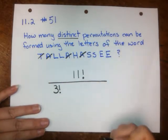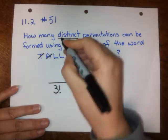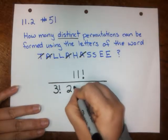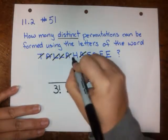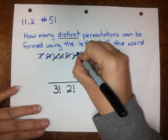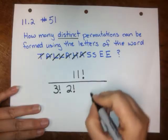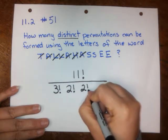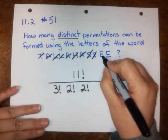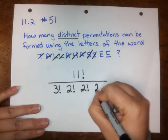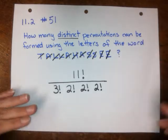Cross them out so I know I've dealt with them. How many L's do I have? 1, 2. So I'll put a 2 factorial in my denominator to deal with those 2 L's. How many H's do I have? Just 1, I don't have to worry about that. How many S's do I have? 2. So I'm going to put a 2 factorial in the denominator to deal with those 2 S's. And finally, I have 2 E's, so I'm going to put another 2 factorial in the denominator to deal with those.